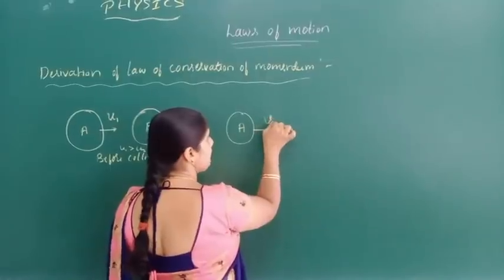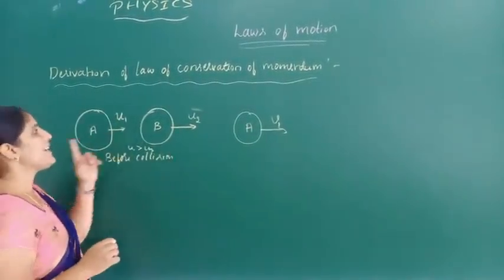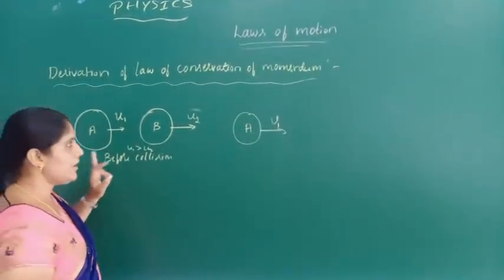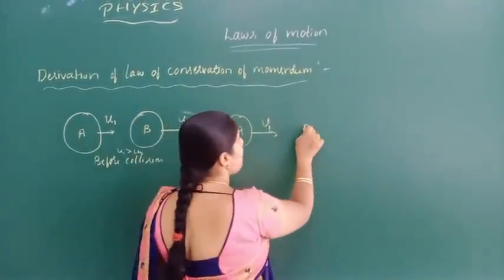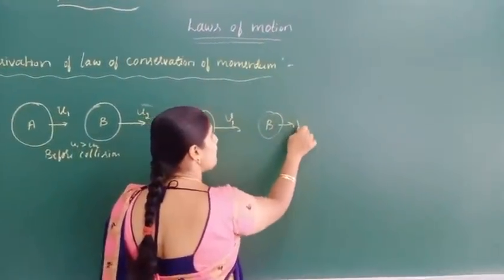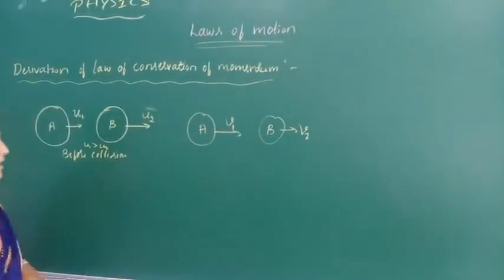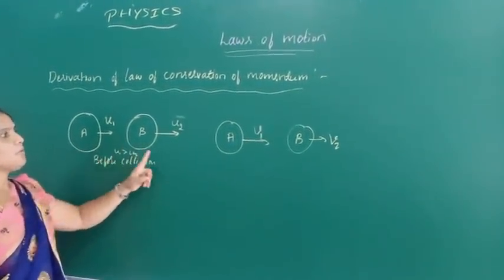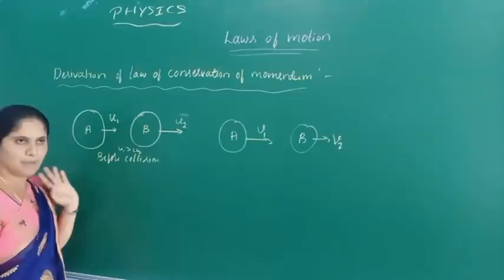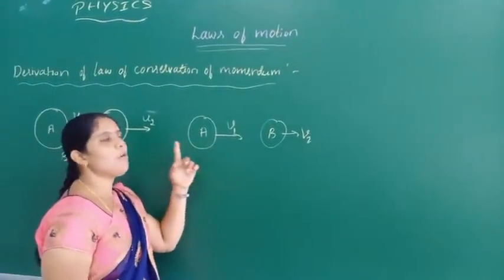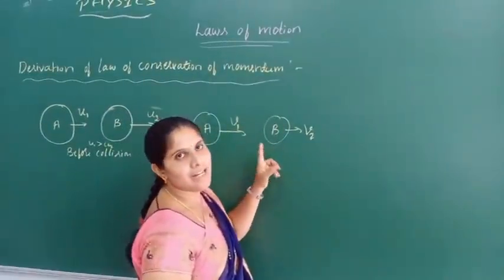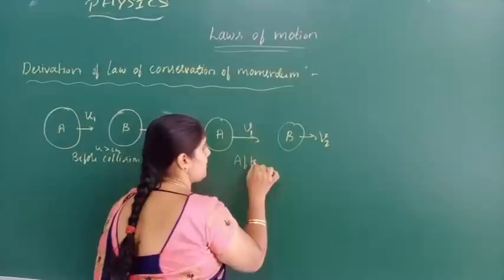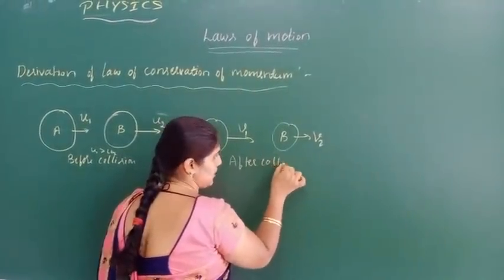After collision, the velocity of A becomes V1 and the velocity of B becomes V2. So V1 is the final velocity of object A and V2 is the final velocity of object B. This is the condition after collision.